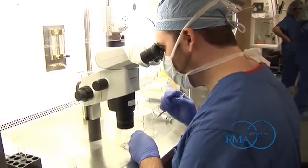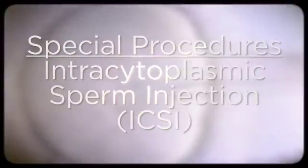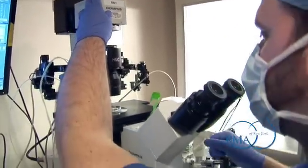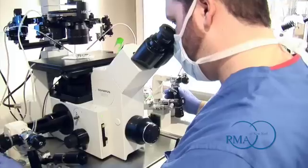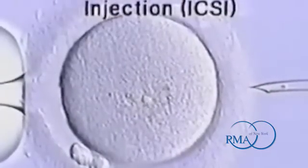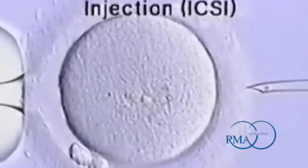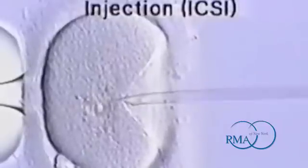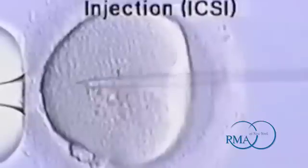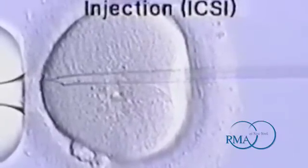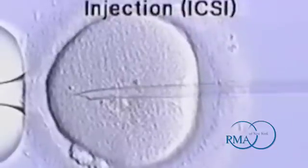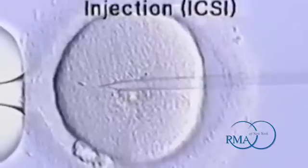One special procedure is intracytoplasmic sperm injection, or ICSI. This procedure is performed by highly skilled embryologists and involves the selection of an individual sperm to be injected into each mature egg. Before this procedure begins, the embryologists carefully verify and confirm all patient-specific identifiers on the sperm and the eggs. Using a microscopic needle, an individual sperm is selected and immobilized, then picked up inside the needle. After alignment of the egg on a holding pipette on the left, the needle is carefully inserted into the egg and a single sperm is deposited. This technique is performed at 400 times magnification, and you can just see the sperm head in the end of the needle before it is inserted. The egg recovers from the injection and is placed into a culture dish overnight so that fertilization can be assessed the next day.